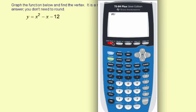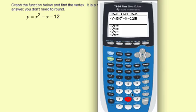We're going to enter in the function, so we hit Y equals and then type it in: x squared, then use the right arrow to get out of the exponent, minus x minus 12. And I'm going to hit the graph button to see the graph.